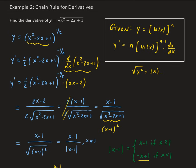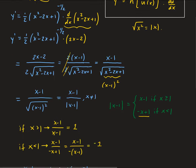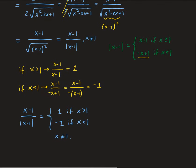To summarize: we rewrote the expression using a fractional exponent, applied the general power rule by bringing down the power, subtracting 1 from it, and taking the derivative of the inside part. From there, we simplified and used the definition of the absolute value to arrive at the final result.